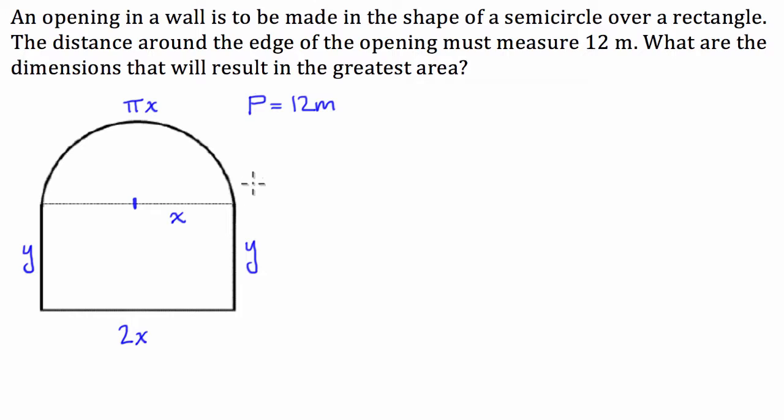So I can say that the perimeter of this shape is going to be equal to 2x plus pi x plus y plus y, so 2y. And it says it has to equal 12.